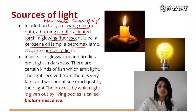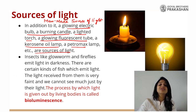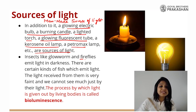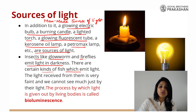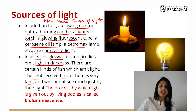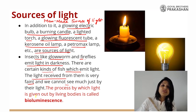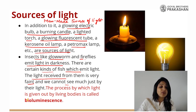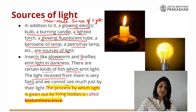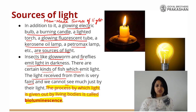Now when I talk about sources of light, you might have even seen some little jugnoos around your area. Those jugnoos are nothing but fireflies. There are some animals and insects as well which produce light. Insects like glowworms and fireflies emit light in the darkness. There are certain kinds of fish also which emit light. The light received from them is very, very small; it cannot enlighten a whole room, but we cannot say that they are not sources of light. If an organism is able to produce light, then we call that phenomenon bioluminescence. The process by which light is given out by living bodies is called bioluminescence.